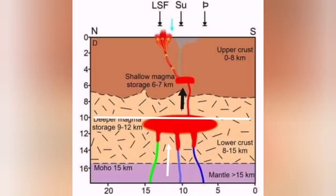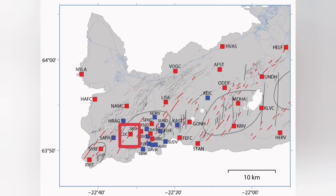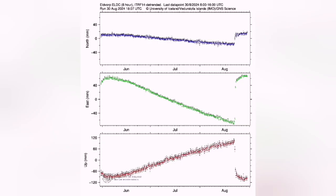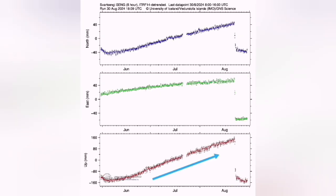We are seeing in three stations, Eldwarp, Svartsangi, and Svartsangi, evidence for the GPS data showing that the land rise due to the magma arriving and accumulating in the Svartsangi medium depth reservoir is increasing.